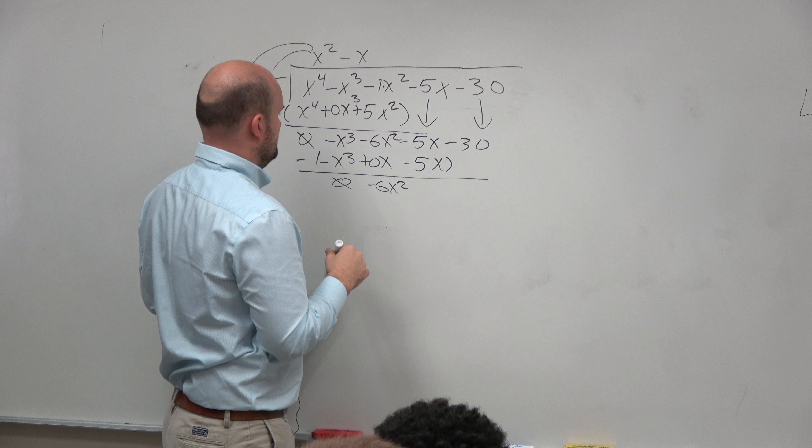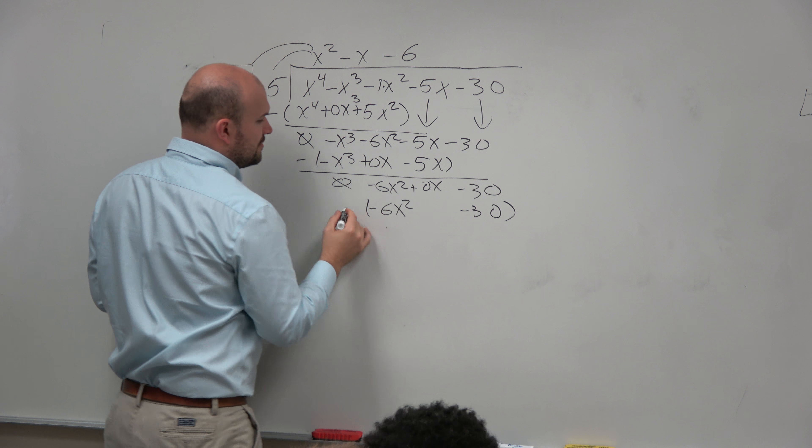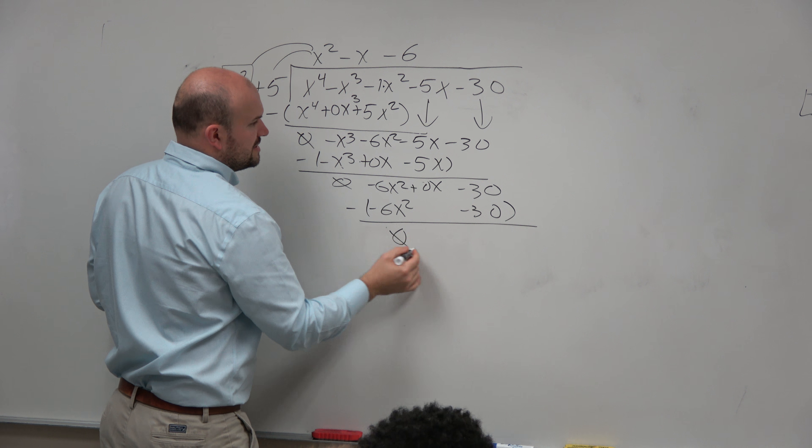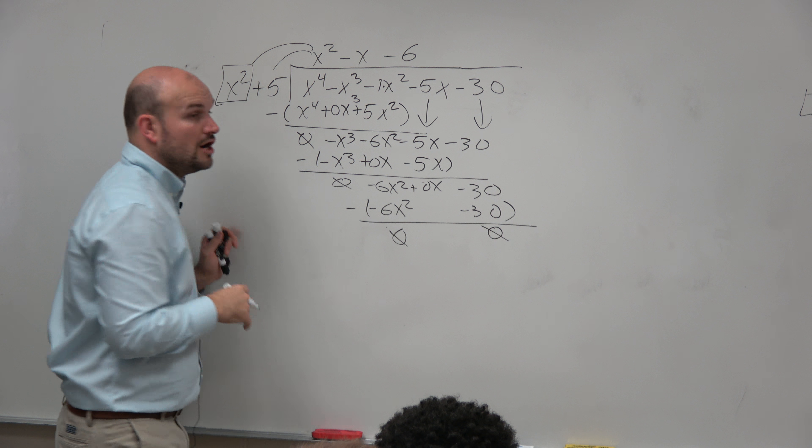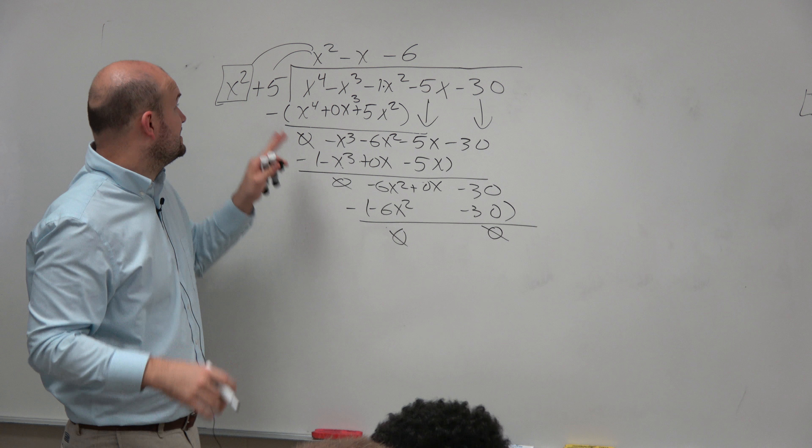x squared divides into negative 6x squared, negative 6 times. Negative 6 times x squared is a negative 6x squared. Negative 6 times 5 is a negative 30. Subtract our rows, 0 and 0. So is x squared plus 5 a factor of this polynomial? Yes.